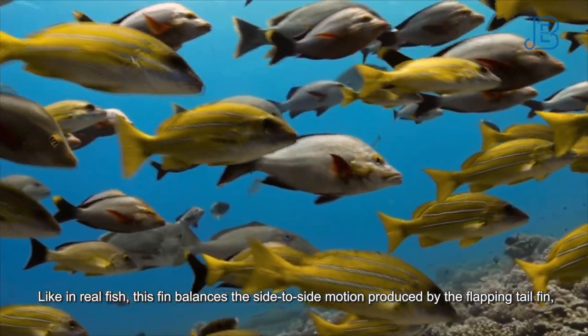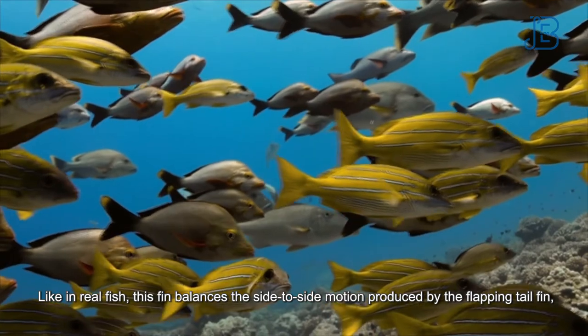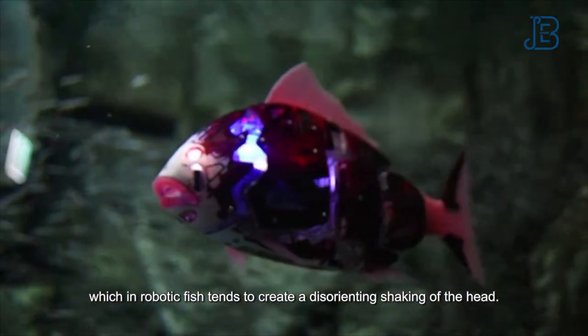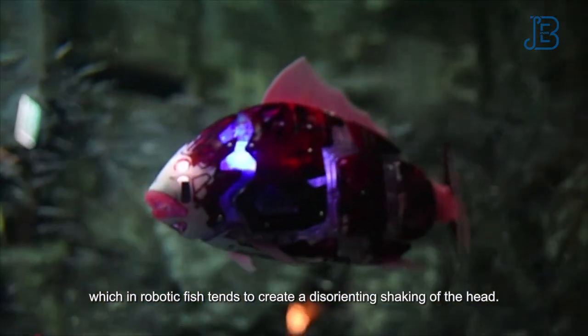Like in real fish, this fin balances the side-to-side motion produced by the flapping tail fin, which in robotic fish tends to create a disorienting shaking of the head.